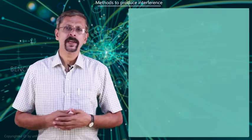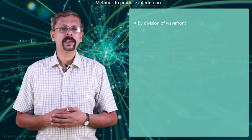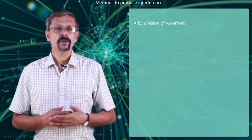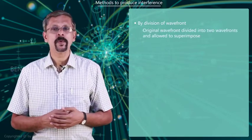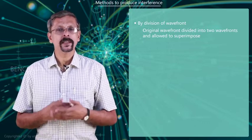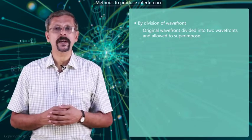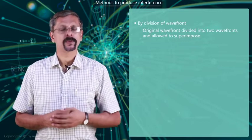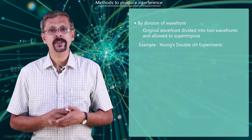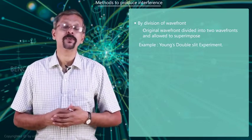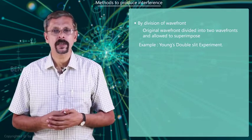Interference by division of wavefront is done in a particular way. In this method, the original wavefront is divided into two wavefronts and these split wavefronts are allowed to superimpose. An example for this type of interference is the famous Young's double slit experiment.